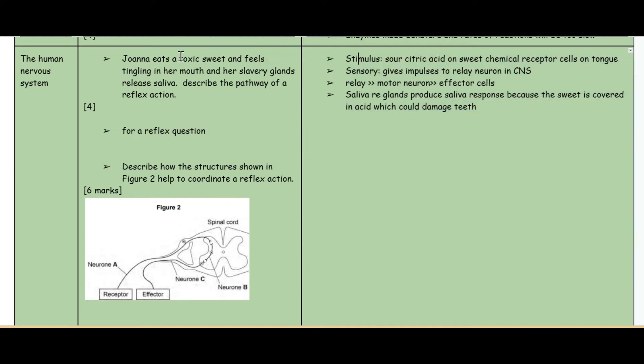The next topic: the human nervous system. Joanna eats a toxic sweet and feels tingling in her mouth and her salivary glands release saliva. Describe the pathway of the reflex action. It begins with the stimulus - the sour citric acid on the sweet. Chemical receptor cells on the tongue detect the stimulus, a changing environment because there is sour citric acid. The sensory neuron gives an impulse to the relay neuron in the CNS.